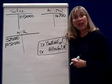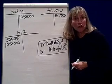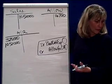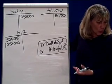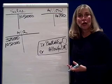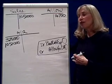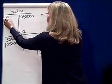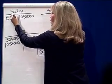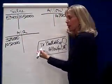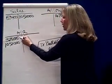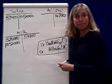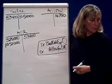In part B, sales returns and allowances — customers who brought it back — were a total of $53,400. If the customer brings it back, we debit sales returns for $53,400 and credit accounts receivable, because they returned it.